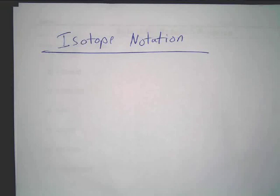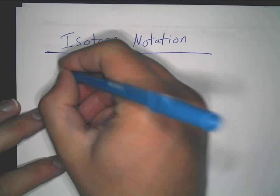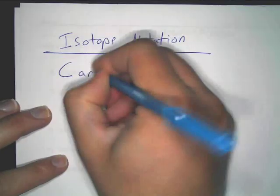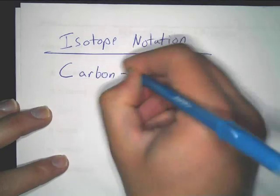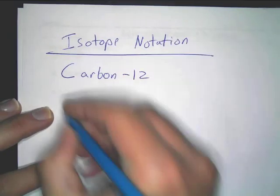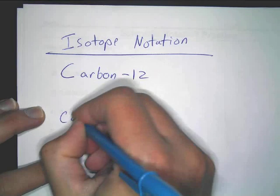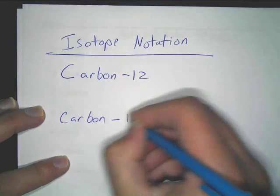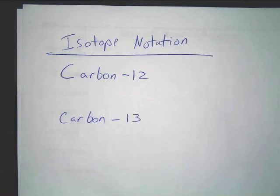You're going to have a couple of examples here. First, you might have something written: carbon 12, and then we'll write carbon 13. These are examples — you want to write this.